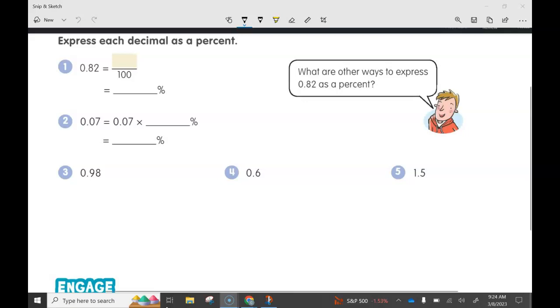Let's look at number 3 together. We have 0.98. For this problem, we are multiplying that decimal by 100 to get the percent. All you need to do is take that decimal, move it two places to the right, and 0.98 equals 98%. Pretty simple.